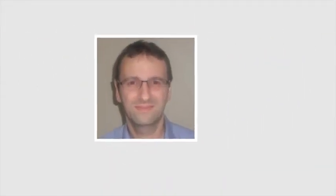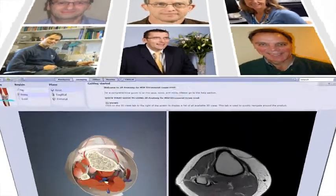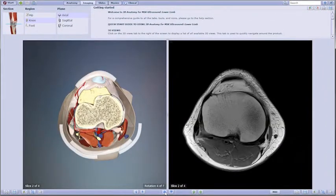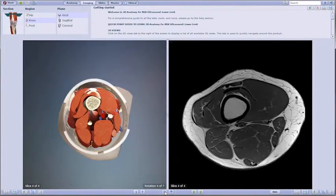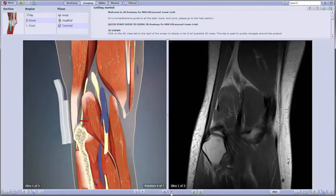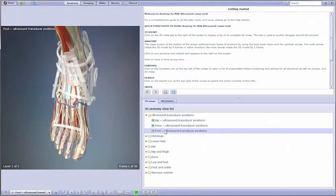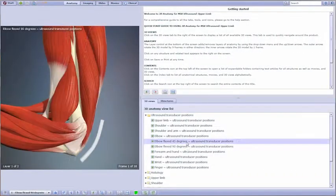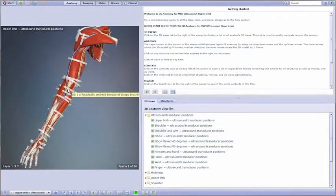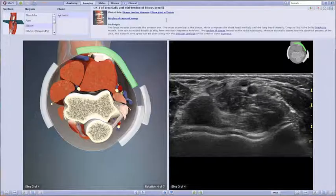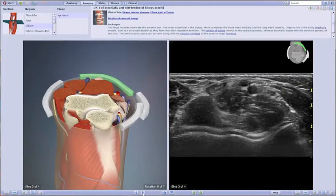Working with a team of specialists, Primal Pictures has created a much needed and unique application for dynamically comparing anatomy with ultrasound and MRI. With a wealth of visual content, the clear and accurate 3D anatomy of the upper and lower limbs is linked to corresponding ultrasound images and MRI, in a digital format for the first time.